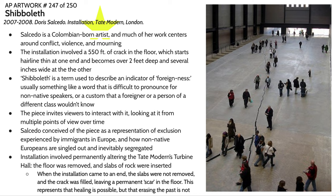These differences are implied to accumulate over time and eventually result in this crack — a physical distance that is difficult to reconcile. There's also the suggestion of physical scarring on the environment, how a lot of these communities are ostracized and separated from the greater local community and made to feel different. Salcedo conceived of this piece as a representation of the exclusion experienced by non-European immigrants in Europe and how non-native communities are singled out and inevitably segregated. As a Colombian artist working in European spaces, Salcedo has actually experienced this herself, which adds additional meaning to the work.